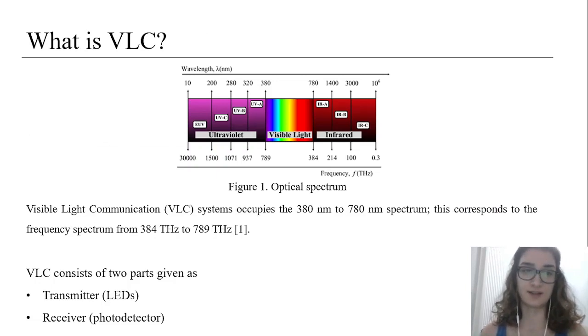What is VLC? Visible Light Communication systems use visible light for communication, occupying the 380 nm to 780 nm spectrum. This corresponds to the frequency spectrum from 384 THz to 789 THz as shown in figure 1. VLC systems are technology in which LEDs are used as transmitters and photodetectors are used as receivers.